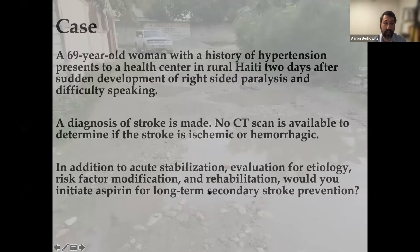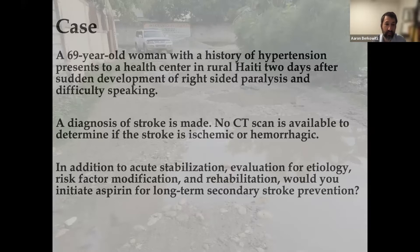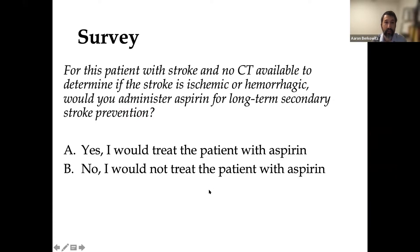So let's begin with a case to set the stage. We'll take the case of a 69-year-old woman with a history of hypertension presenting to a health center in rural Haiti two days after sudden development of right-sided paralysis and difficulty speaking. A diagnosis of stroke is made. There's no CT scan available to determine if the stroke is ischemic or hemorrhagic. A question that often comes up is: would you initiate aspirin for long-term secondary stroke prevention in this patient, acknowledging that without CT it's impossible to know the stroke type?